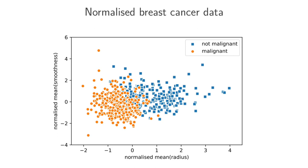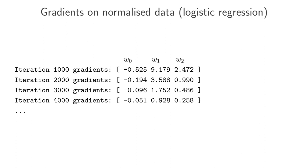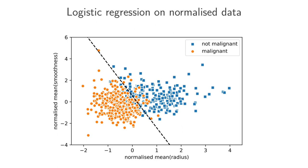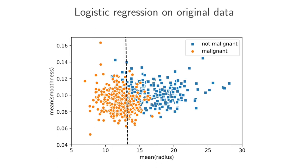Now let's do logistic regression again using linear logistic regression trained with gradient descent. Similar to before, the gradient updates for our three parameters now have scales that are much closer together — within a factor of 10 from one another. And if we look at the decision boundary from logistic regression on this normalized data, we see a very nice fit. Comparing back to logistic regression on the original data, just intuitively looking at these decision boundaries, we see a much nicer fit using the normalized data.